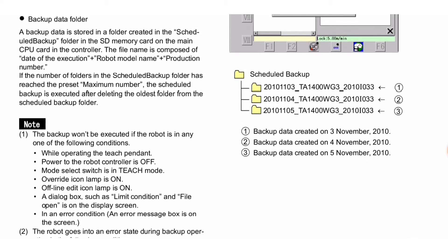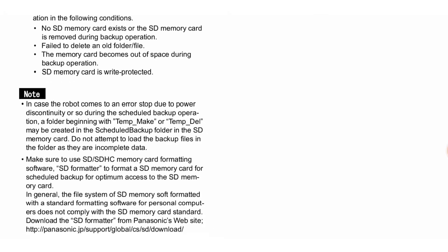On screen you can see example scheduled backup folder names composed of date, robot model, and production number. For example: first backup data created on 3 November 2010, second backup data created on 4 November 2010, third backup data created on 5 November 2010. The dates of each backup are shown here in sequence.